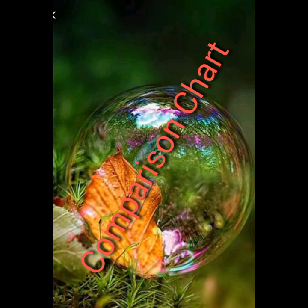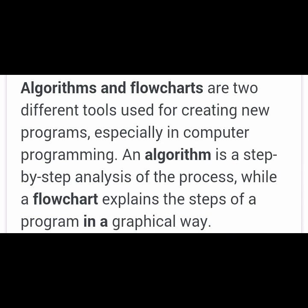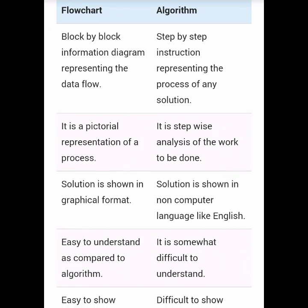Let's see the comparison of flowchart and algorithm. First: flowchart is a block-by-block information diagram representing data flow; in algorithm, it is step-by-step instructions representing the process of any solution. Second: flowchart is a pictorial representation of a process; in algorithm, it is stepwise analysis of the work to be done. Third: solution is shown in graphic format in flowchart; in algorithm, solution is shown in non-computer language like English. Fourth: flowchart is easy to understand compared to algorithm, which is somewhat difficult. Fifth: flowchart is easy to show; in algorithm, it is very difficult to show.